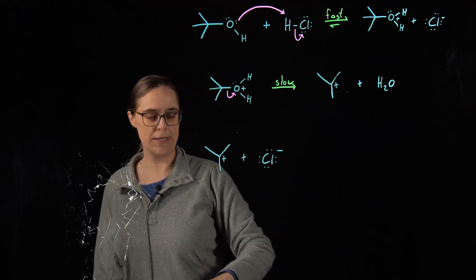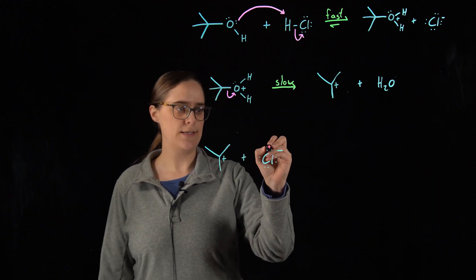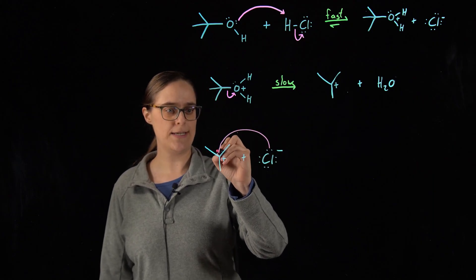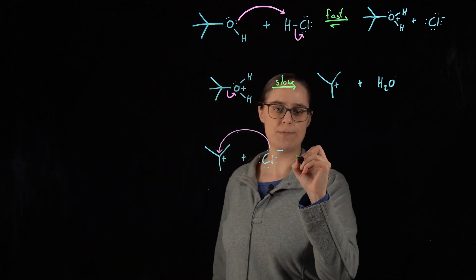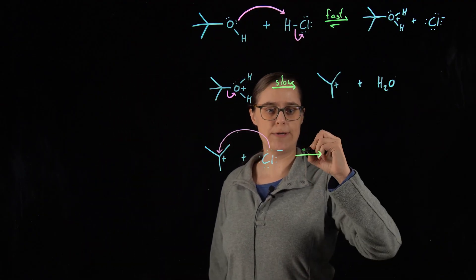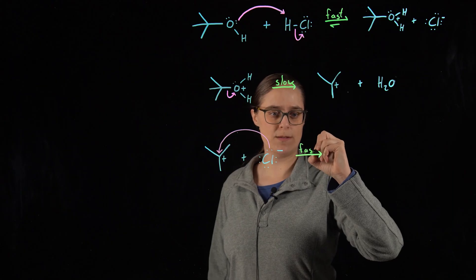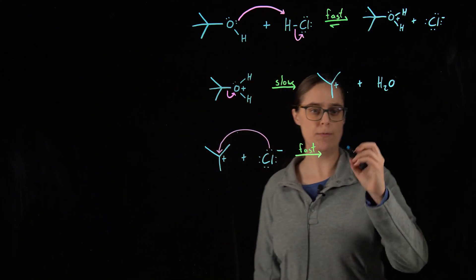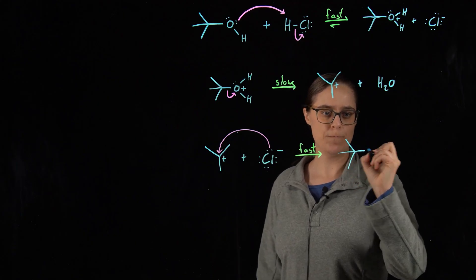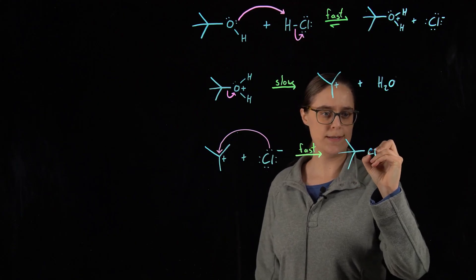We have a carbocation with a positive charge. These electrons are going to attack the positive charge. This is going to be irreversible and it's going to happen quickly. So I'm writing the word fast above the arrow.